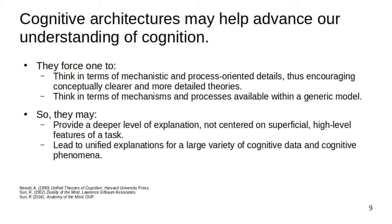On the psychological front, there are two primary reasons why cognitive architectures may help advance understanding. First, they force one to think in terms of mechanisms and processes available within a generic model. These considerations together mean that cognitive architectures may provide deeper explanations of phenomena that are not centered on superficial, high-level features of a task, but rather on generic mechanisms of a cognitive agent. As a result, cognitive architectures may lead to unified explanations for a large variety of cognitive data and phenomena.